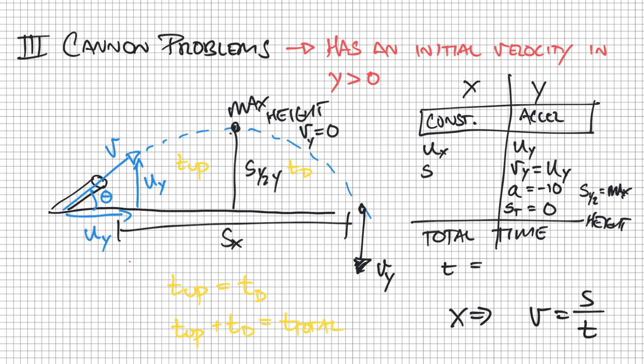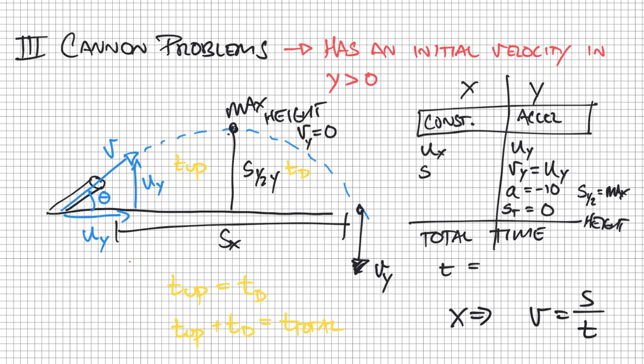But the same premise. If I can understand that X motion is constant and the only equation is that constant velocity equation, my Y motion is accelerated and I can use any of those acceleration equations, then I should be able to work out and be able to take the idea of total time back and forth.